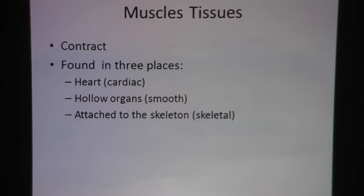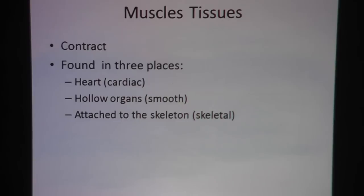Remember, the definition of muscle tissue is that they must contract. We have three places in the body: we have cardiac muscle in the heart, around hollow organs we have smooth muscles, and attached to the skeleton we have skeletal muscle.